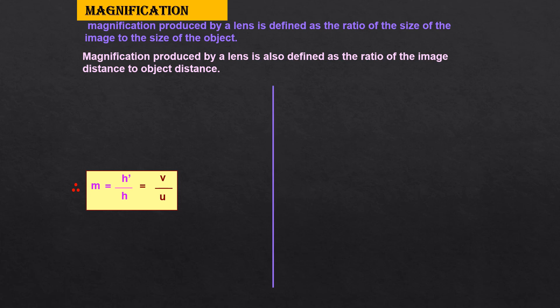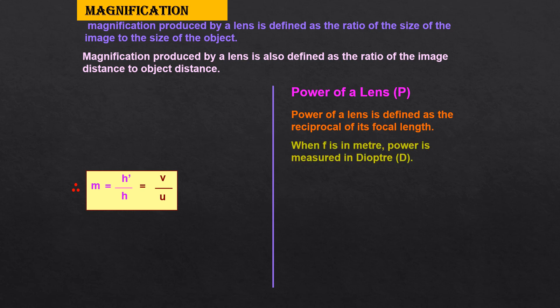We will go to the last concept of this lesson, that is power of the lens. Power of the lens is defined as reciprocal of its focal length. When F is in meters, power is measured in diopter D. If F is given in meters, power is equal to 1 by F in meters.